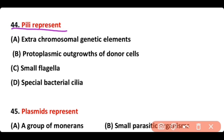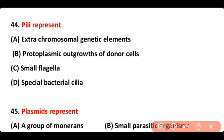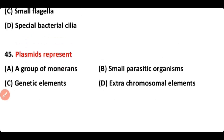Question number 44: Pili represent — extra-chromosomal genetic elements, protoplasmic outgrowth of donor cells, small flagella, or special bacterial cilia? The correct answer is option B. Pili are actually protoplasmic outgrowths of donor cells.